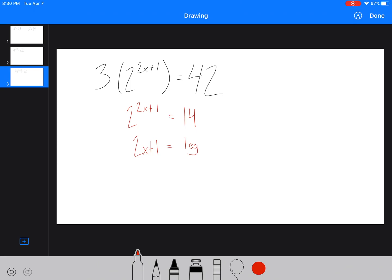Okay, and then we're going to do the exact same thing. 2 to the x plus 1 equals log of 14 over log 2. 2x plus 1 equals about, we'll call it 3.81.